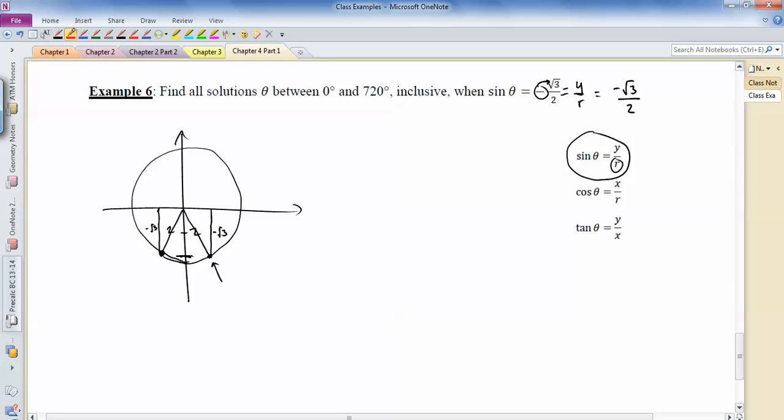Okay, so you might realize that this is a part of a 30-60-90 triangle here. So this angle right here opposite the root 3 is the 60. So this angle, this is a 1, this is a 1. This angle would also be 60.